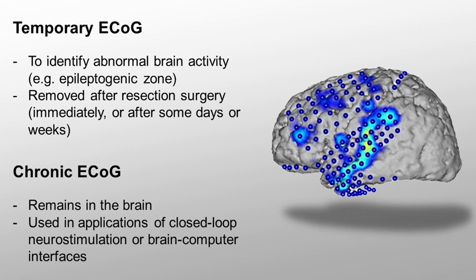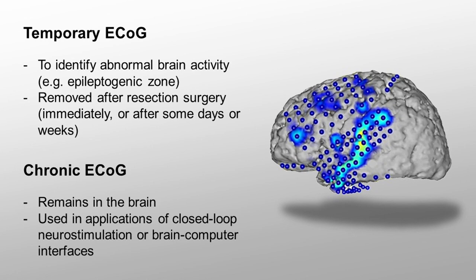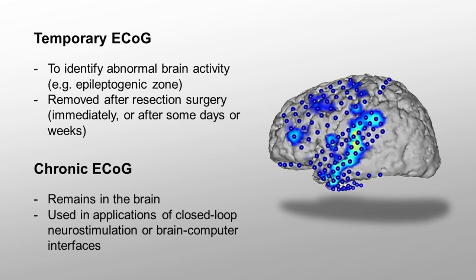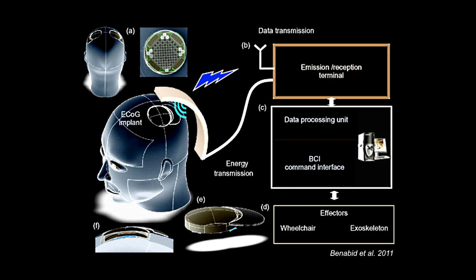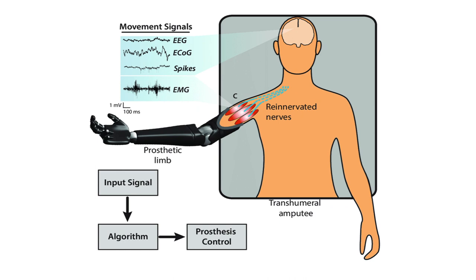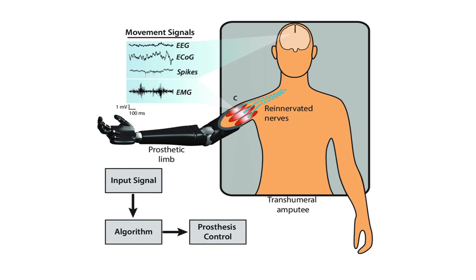Most ECOG grids are placed for a short time. However, recent advances allow for long-term or chronic placement of ECOG sensors. This allows for the development of ECOG-based brain-computer interfaces and closed-loop approaches, which can be combined with stimulation devices. That means the patient's brain signals are constantly monitored, and if an abnormal activation is picked up, stimulation through a small electric impulse can be applied to fix the problem. Another application, for example in patients with movement disabilities, is to use long-term ECOG to control prosthetics — where movement planning signals from the motor cortex are recorded, classified, and then translated to actual movement of an artificial arm or hand.